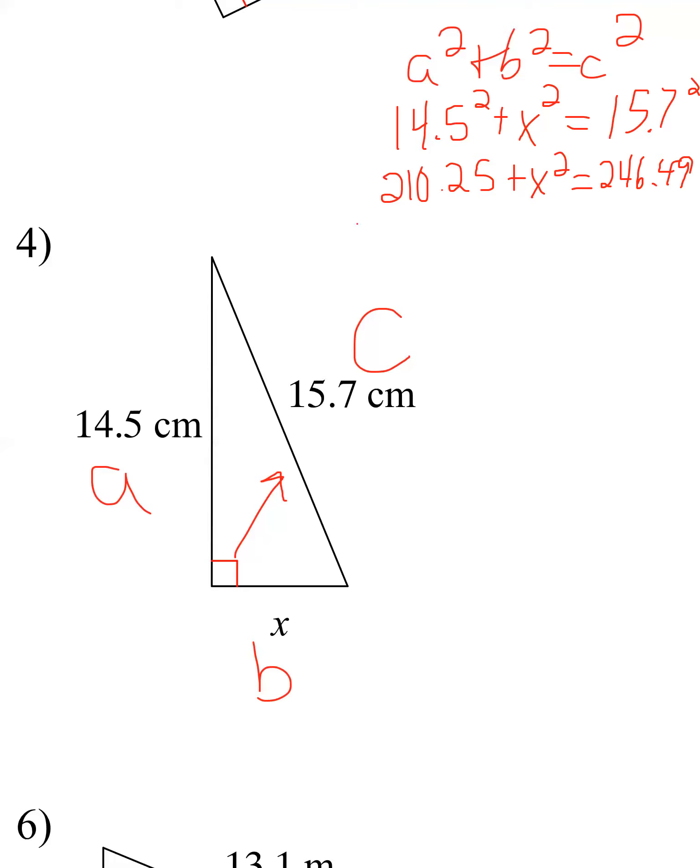We'll subtract the 210.25 from both sides to see what is left. I get 36.24. And then the last thing I have to do is take those square roots of both sides, and x is just 6.0. Does it make sense in my problem? Yes it does - it was certainly supposed to be less than 15.7 and 6.0 certainly is. So give these a shot, let me know if you have questions.